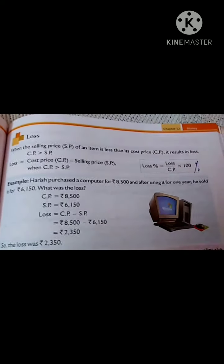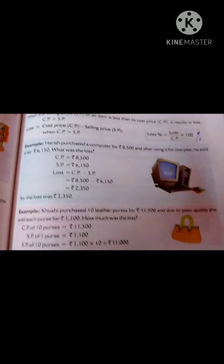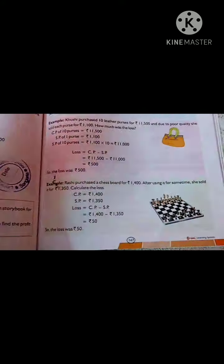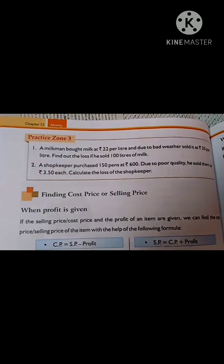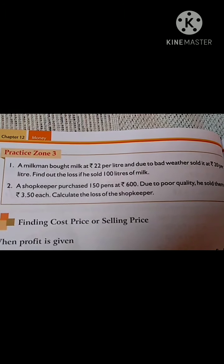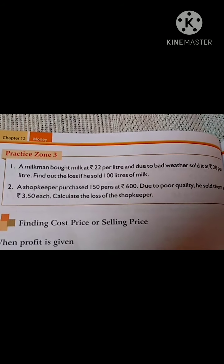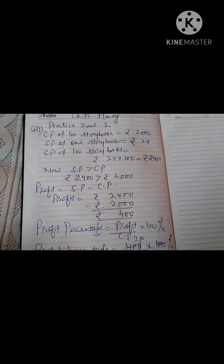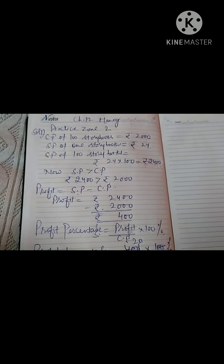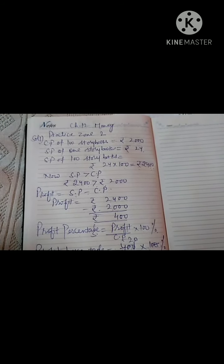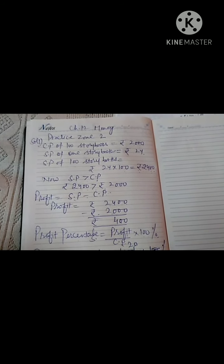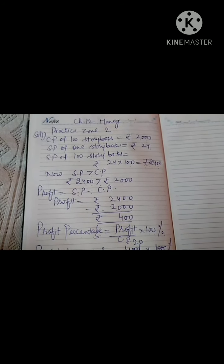Revise the two examples on loss and try to solve Practice Zone 3. Your homework will be Practice Zone question number two — if the cost price of 10 items is equal to the selling price of 5 items, find the profit percentage. Try this question yourself. Stay alert, stay healthy, mask yourself and be protected from COVID-19. Thank you.